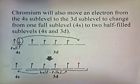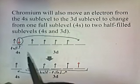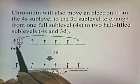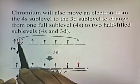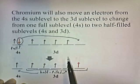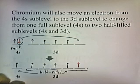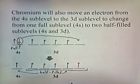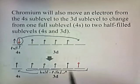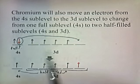Chromium will also move an electron from the 4s sublevel to the 3d sublevel, changing from one full sublevel in 4s to two half-filled sublevels. Chromium has a full S sublevel, then it transfers an electron to the 3d level. Now we have a half-filled 4s sublevel and a half-filled D sublevel. The D sublevel can hold ten electrons, and here there are five, so the 3d sublevel is only half-full. We have two half-filled sublevels, which is more stable than one full sublevel.